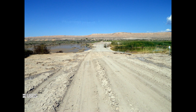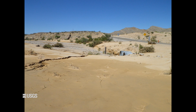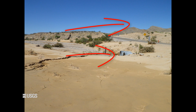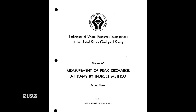Keep in mind that this video will only cover the single component road overflow type of indirect measurement. If you have an indirect measurement that will have multiple components, such as flow going over a road and through a culvert or bridge opening at the same time, please refer to the multiple component video as well. The information presented in this single component video can also be found in TWRI 3-A5, Measurement of Peak Discharge at Dams by Indirect Methods.